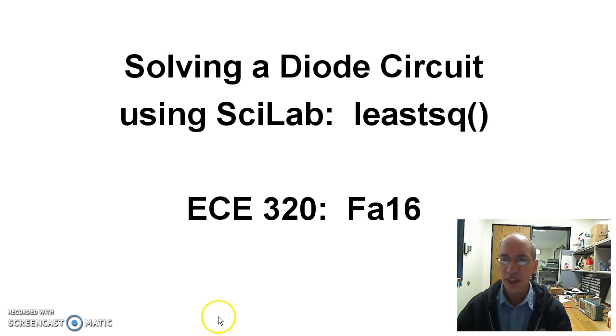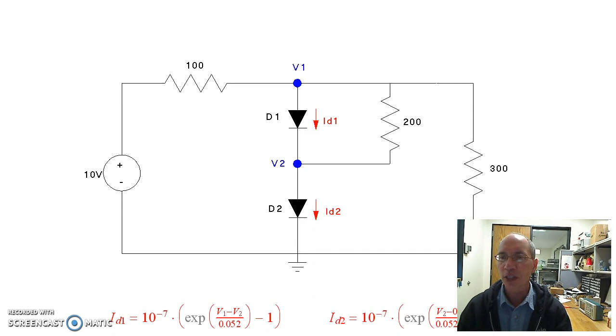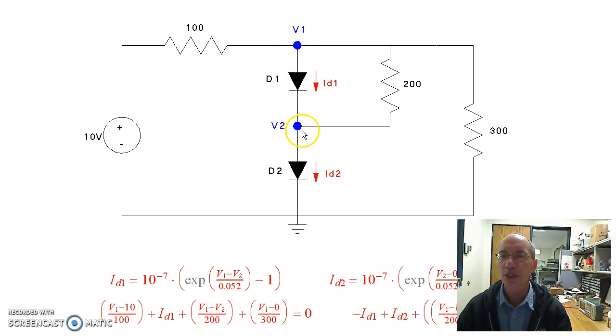As an example of the circuit I want to look at, consider the following diode circuit. I've got two voltage nodes, so I've got two equations for two unknowns. The equations are the current has to add to zero. Once I know the voltages, if I guess V1, V2, I can calculate the current through the diode.